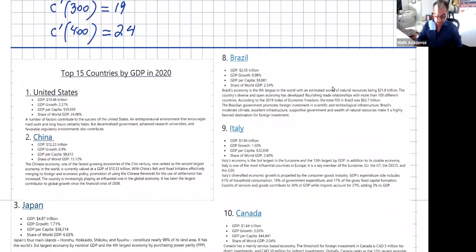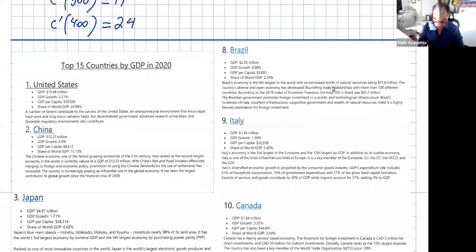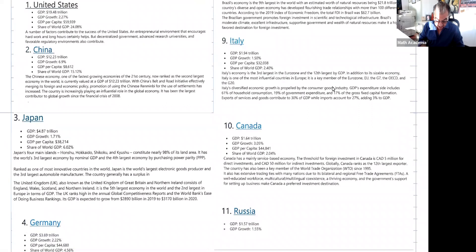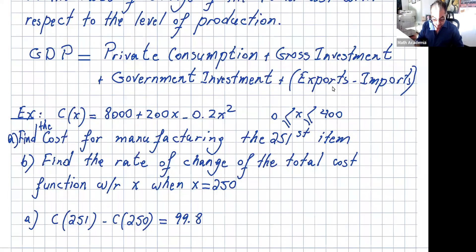Looking at the top 15 countries by GDP in 2020: the United States has a GDP of 19.48 trillion dollars — the highest in the world — with a growth rate of 2.27 percent. China has 12.23 trillion dollars, much less than the US, but its growth rate is 6.9 percent, the highest in the world. So the rate is very important.